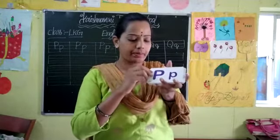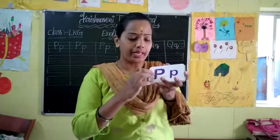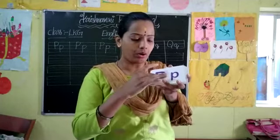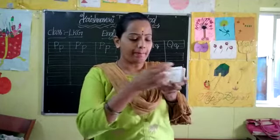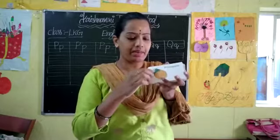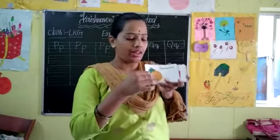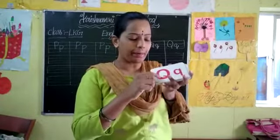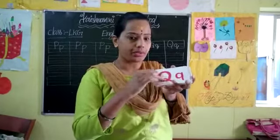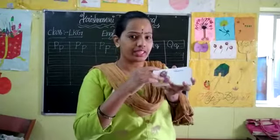And next letter is O. Capital O, small o. O for ox. And next letter is P. Capital P. P for pineapple — see here, pineapple is there. P for pineapple.